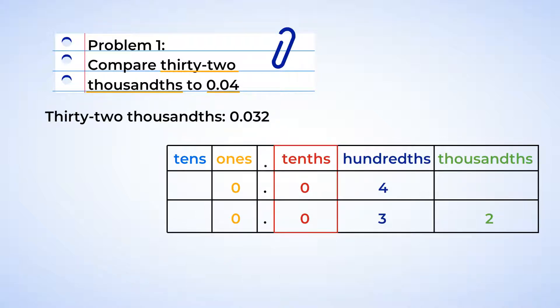And now we can look at the place values starting with the tenths. Now both numbers have a zero. So moving on to the hundredths. Four is greater than three. And this means that thirty-two thousandths is less than four hundredths. And let's write that out with the symbols. Fantastic work.